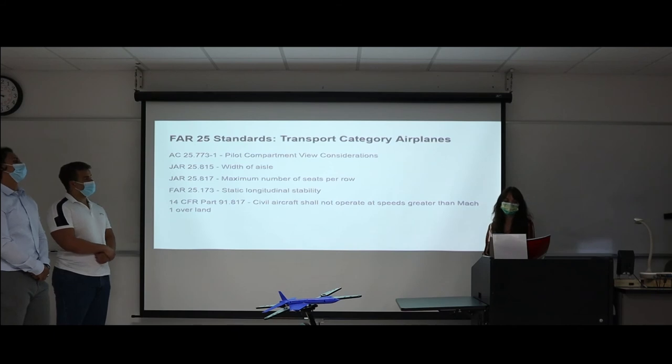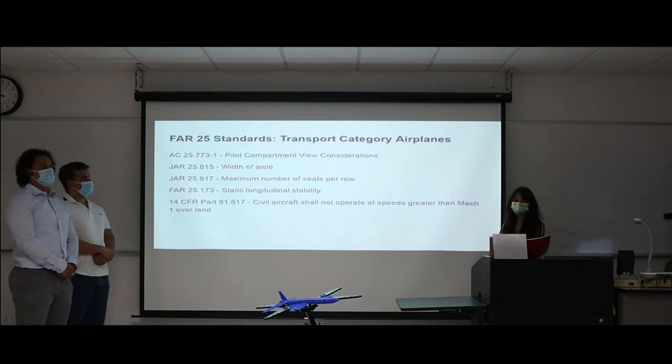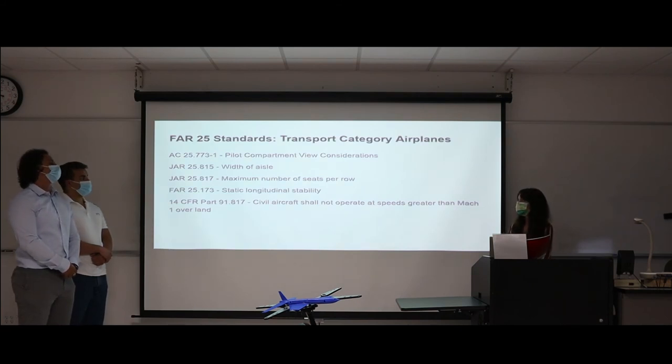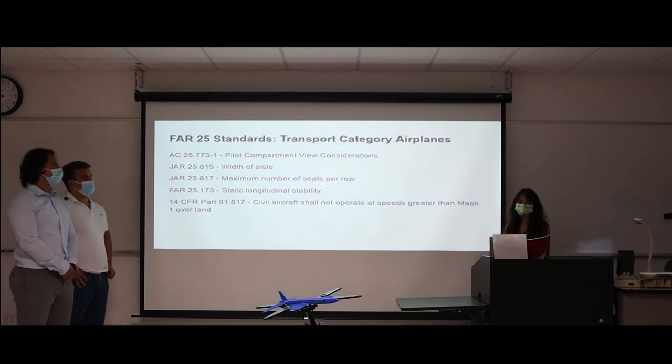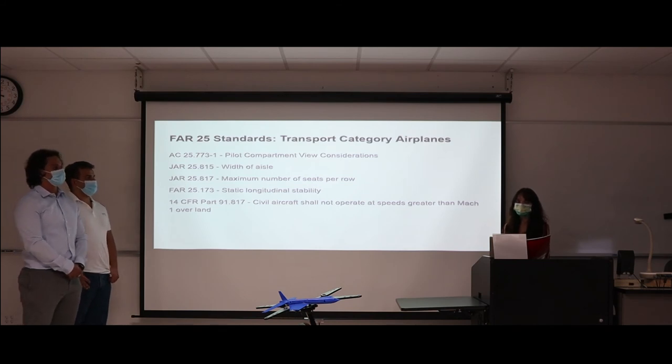Standards followed in the design of our aircraft were those listed in the FAR 25, which is the Federal Aviation Regulation Chapter specifically for transport aircrafts. The two that had the greatest influence on our design pertain to the aisle width and the number of seats per row. This dictated the diameter and length of our fuselage.